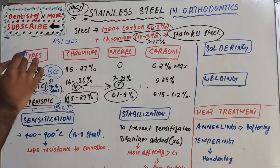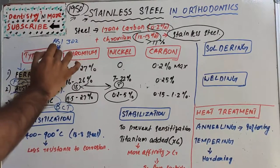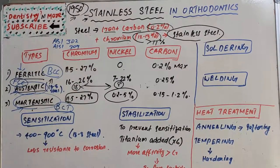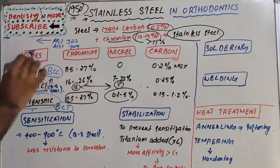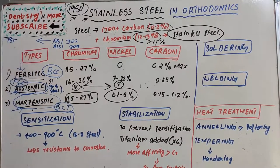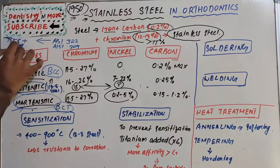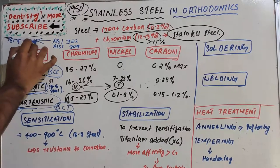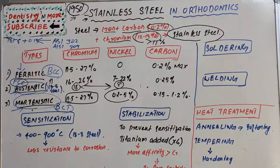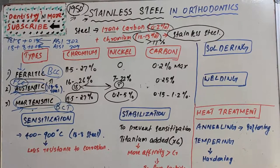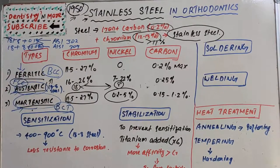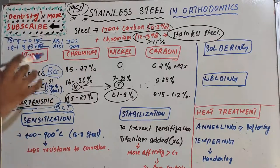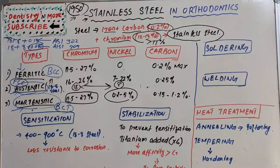The austenitic stainless steel has two main varieties: AISI 302 and AISI 304. The AISI 302 has 18% chromium, 8% nickel, and 0.15% carbon. The AISI 304 group has a comparatively lower carbon component of 0.08%. These are the two different types of austenitic orthodontic wires.